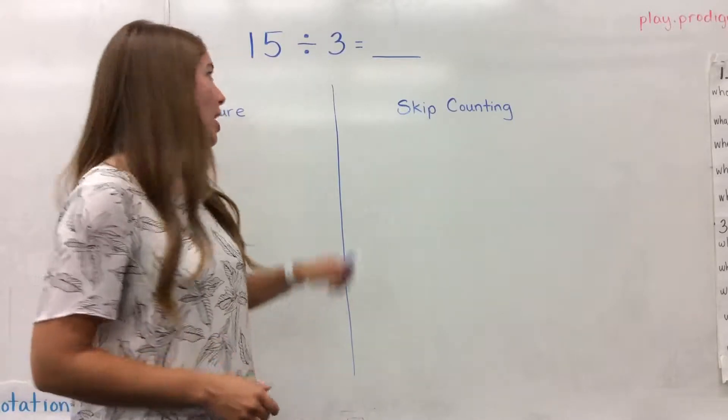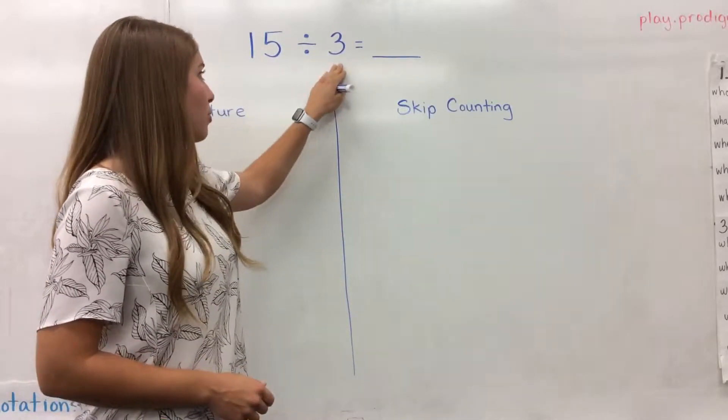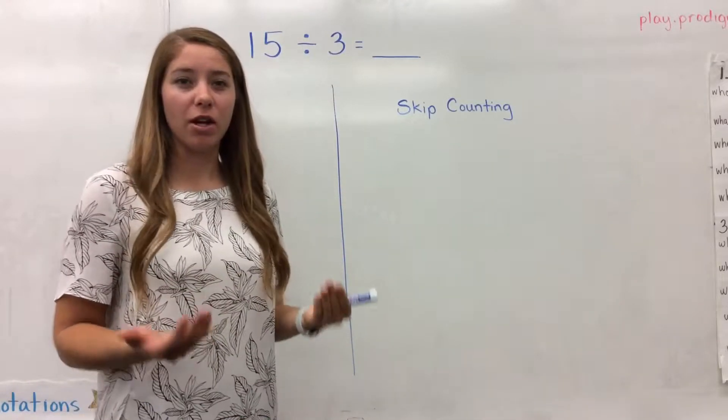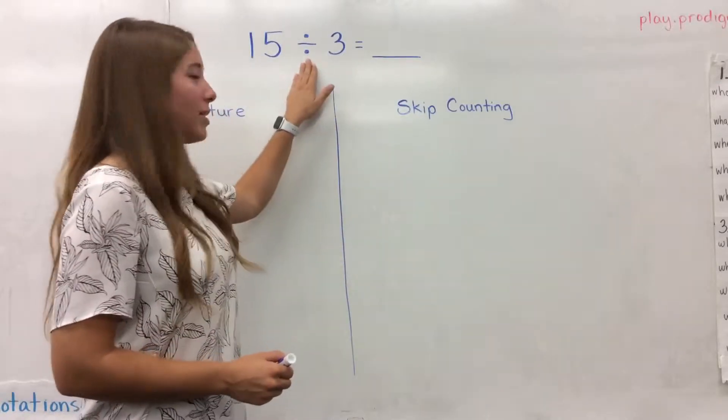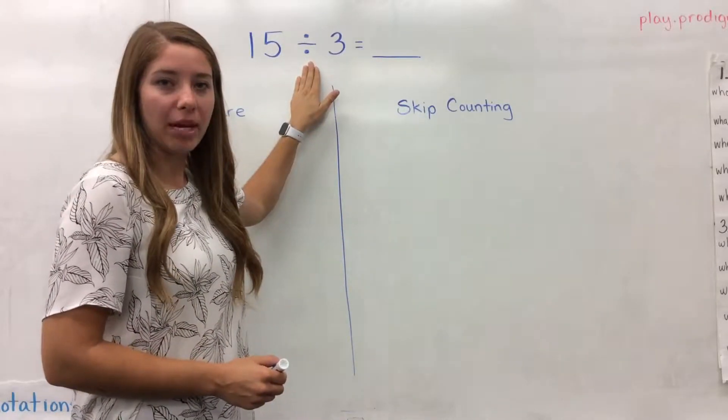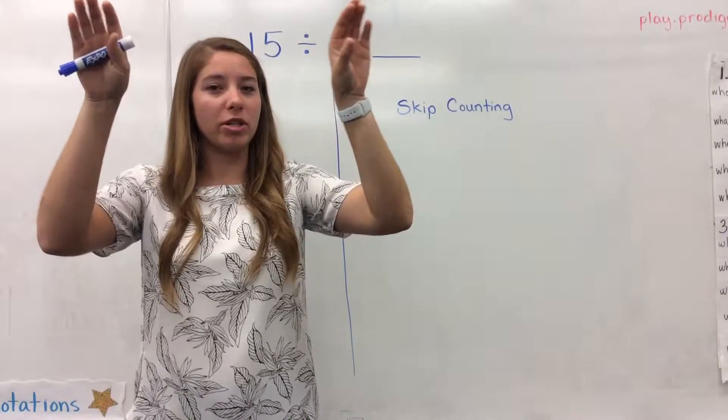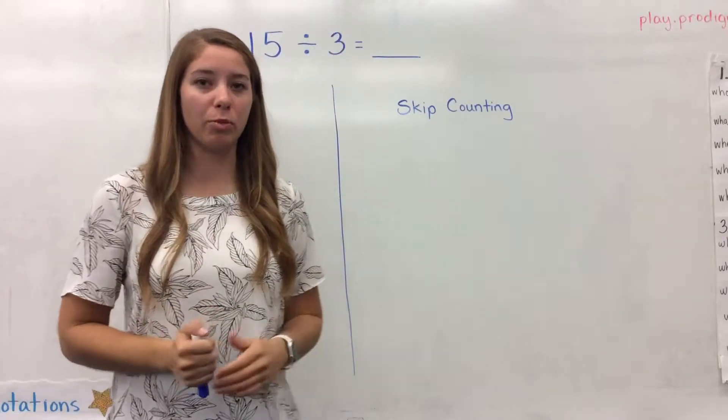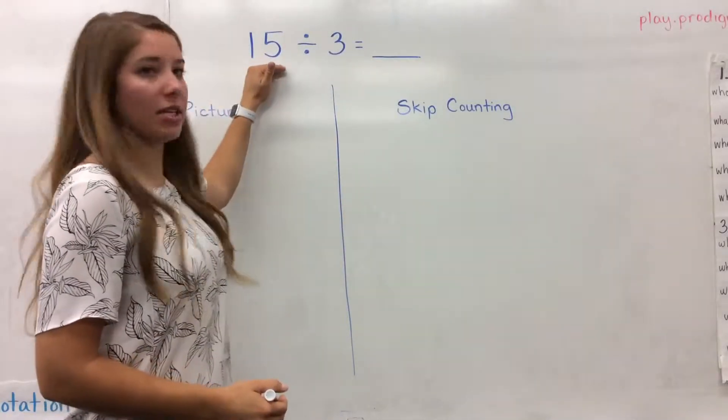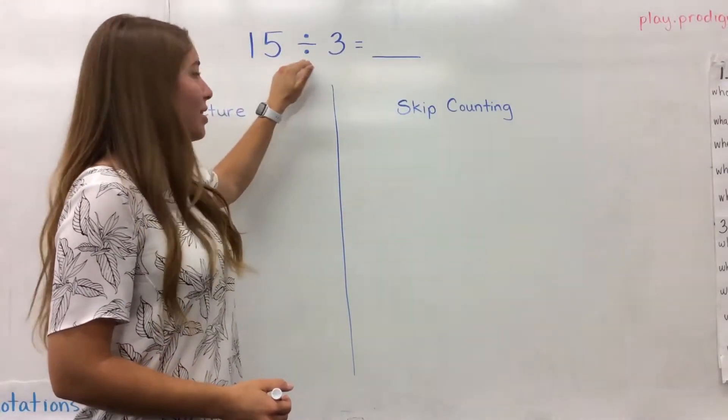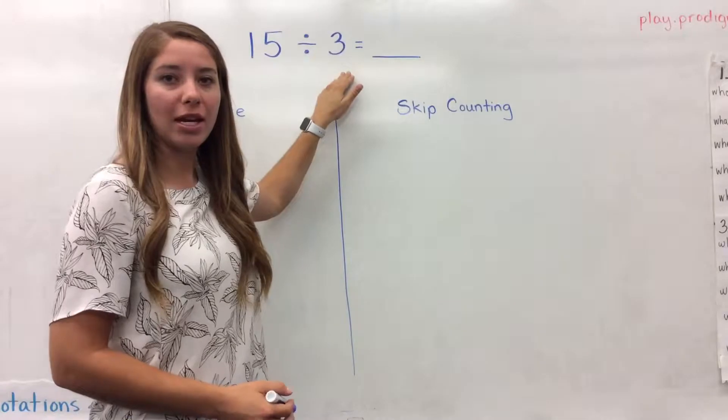Our problem that we're going to solve this morning is 15 divided by 3. And in order to be able to solve this, we actually really have to understand what this division symbol means. Division is taking the total amount of objects and breaking that apart or dividing it into equal groups. So in this case, 15 is the total amount, and we're going to divide that into three equal groups.